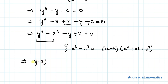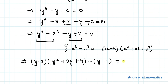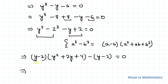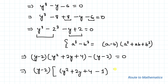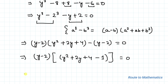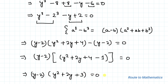So we can write (y minus 2)(y² + 2y + 4), and from the remaining two terms I take minus one common, giving minus(y minus 2). Now taking (y minus 2) common: (y minus 2)(y² + 2y + 4 minus 1) equals 0. This simplifies to (y minus 2)(y² + 2y + 3) equals 0.